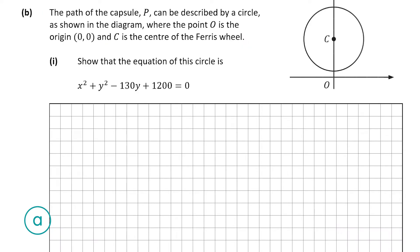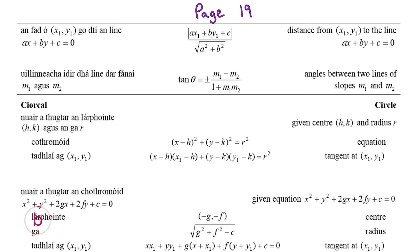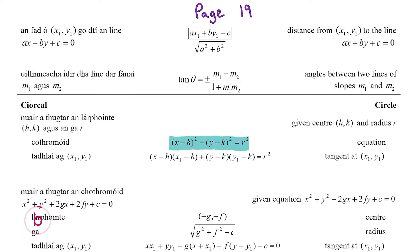Now moving on to part B. The path of capsule P can be described by a circle where O is the origin (0,0) and C is the center of the Ferris wheel. B part 1 is worth 5 marks and asks us to show that the equation of the circle is x² + y² - 130y + 1200 = 0. We look at page 19 of the formula tables for the equation of a circle, and we need to find the center and radius.